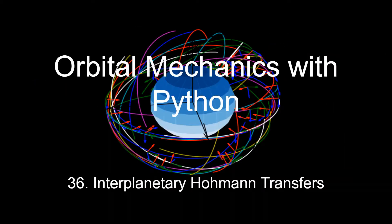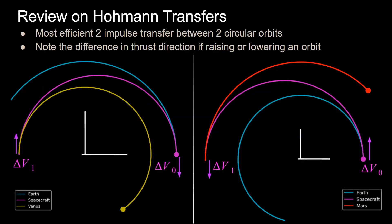This is the 36th video in this series, and in this one I'm going to be going over interplanetary Hohmann transfers. I already have two videos on Hohmann transfers that go farther into the details of them, and I'll have links in the description, but I'll give a quick review here. Hohmann transfers are the most efficient two-impulse transfer between two circular orbits. Note that it's two-impulse, because in some cases a bi-elliptical transfer with three impulses costs less delta-v than Hohmann transfers.